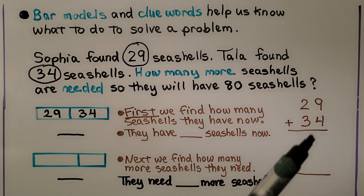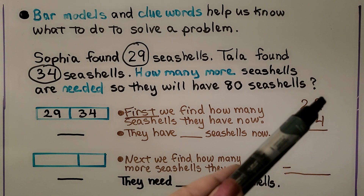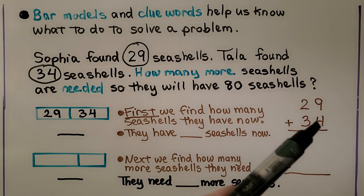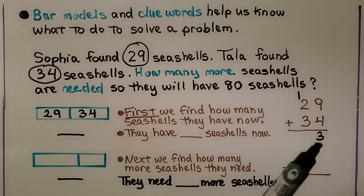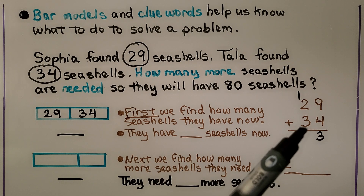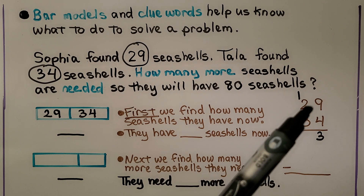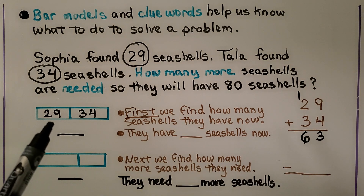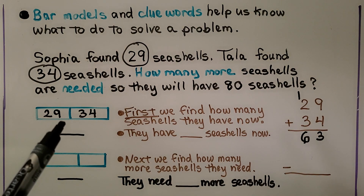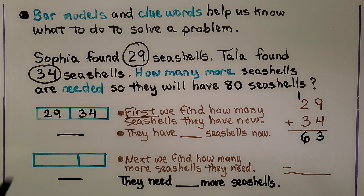We write it in place value columns and start with the ones place. 9 plus 4 is equal to 13. We regroup a ten and put the 3 in the ones place. Then we add the tens: we have 3, 4, 5, 6 tens. That means 29 plus 34 is 63. They have 63 shells now.